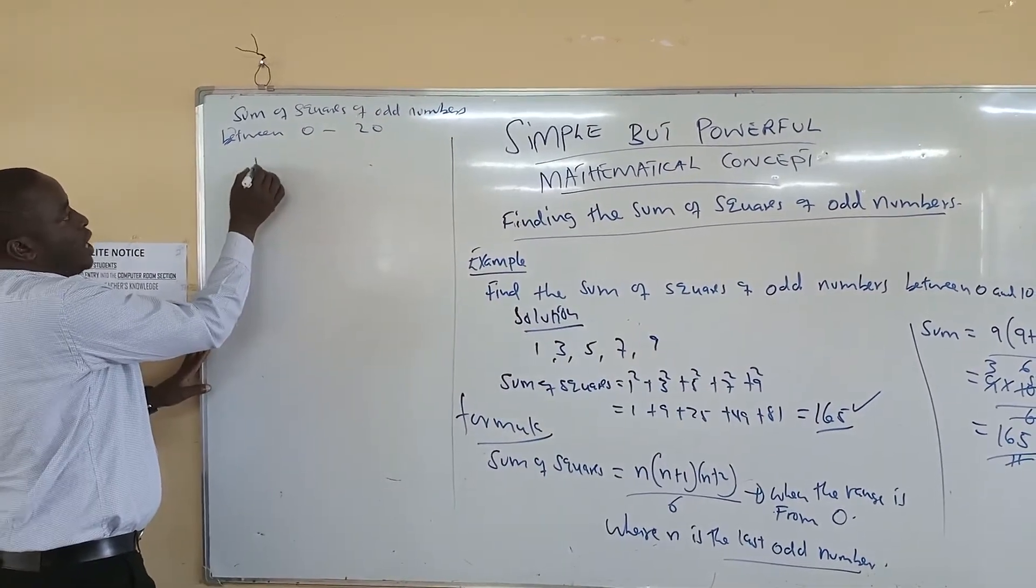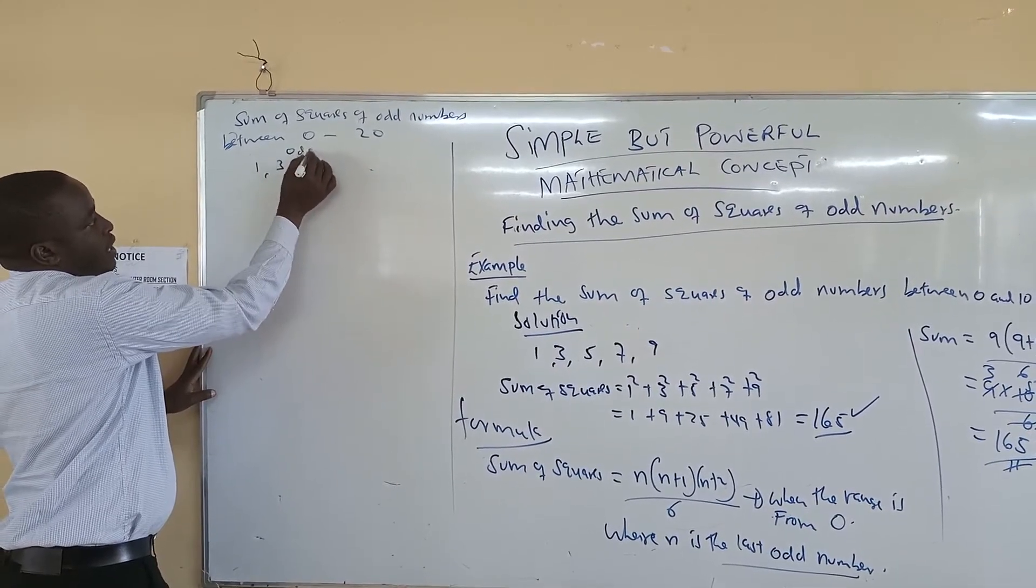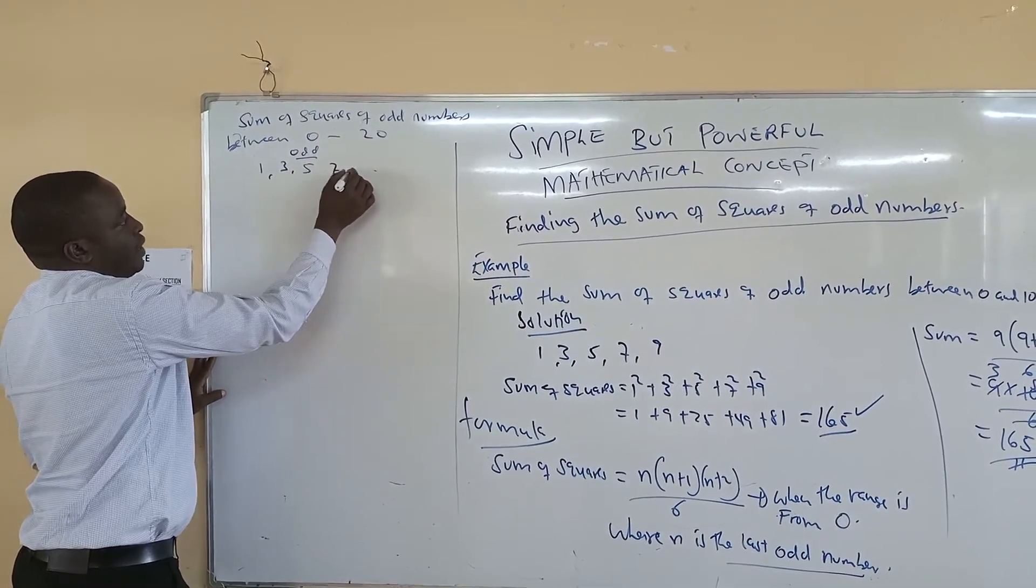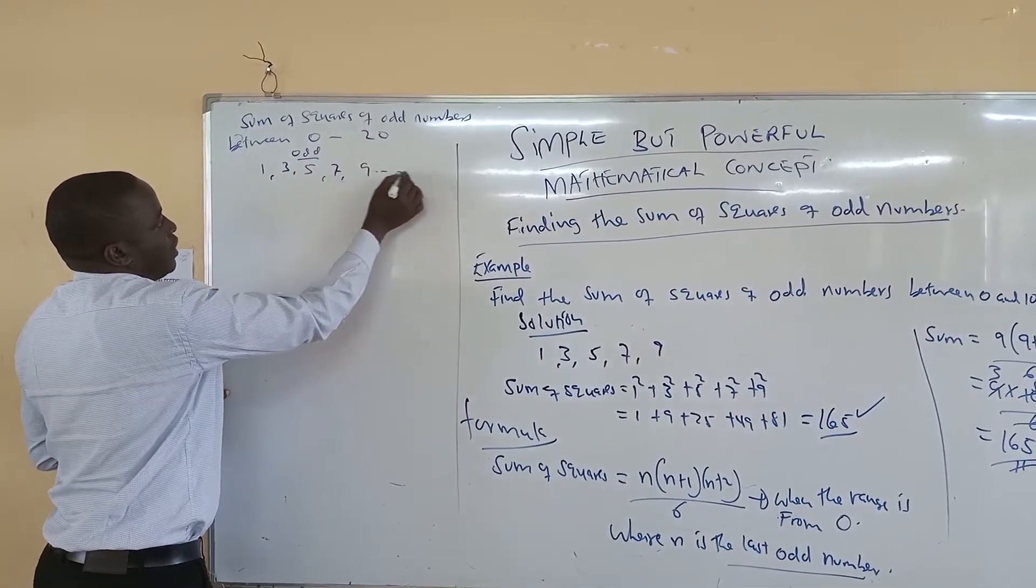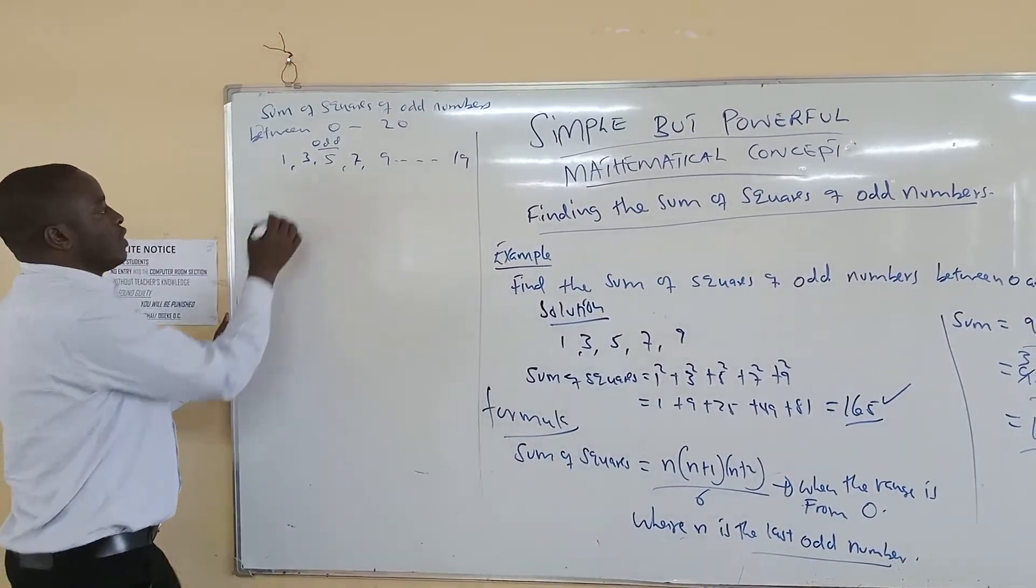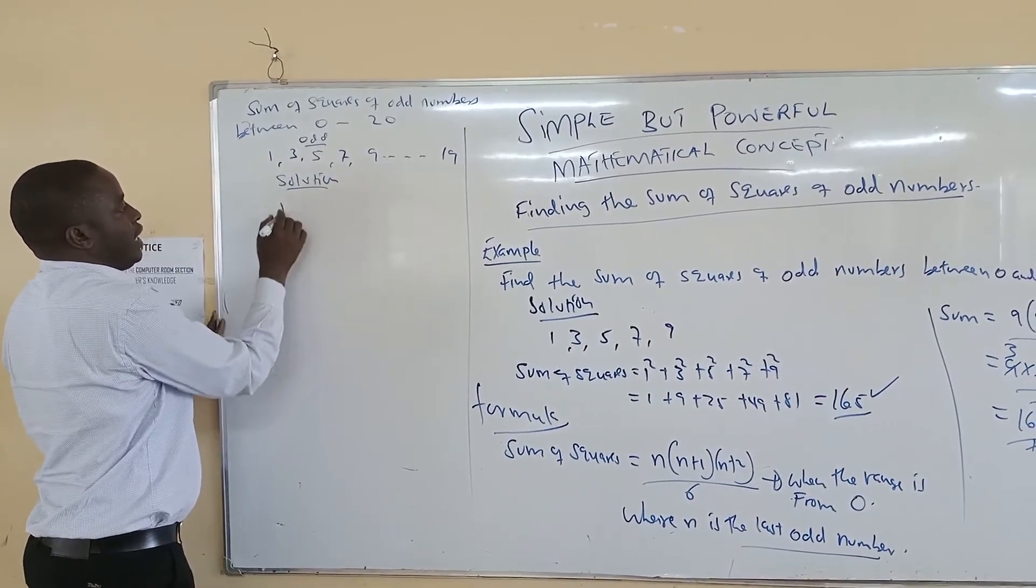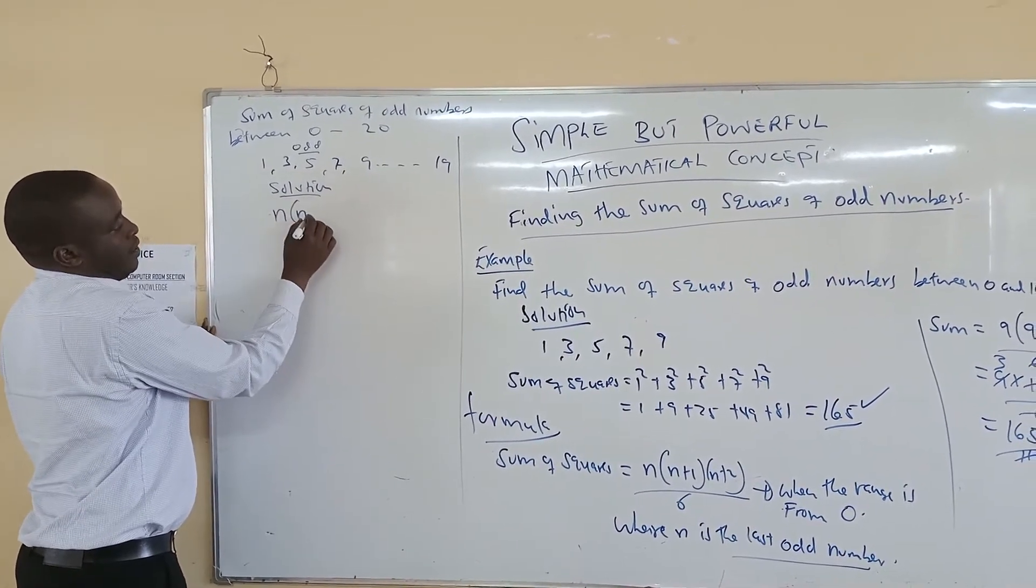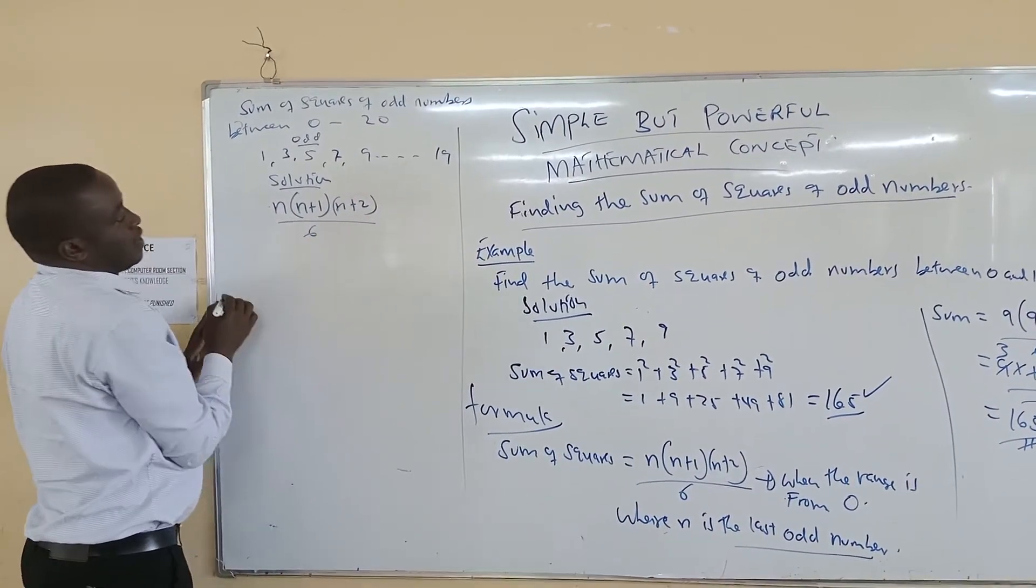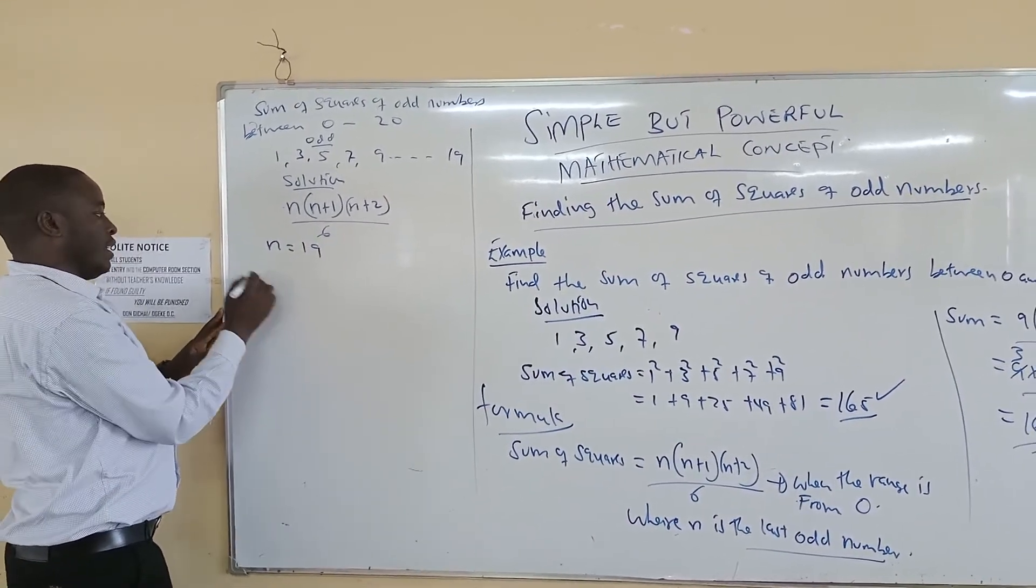So between 0 and 20, we know we shall have the odd numbers 1, 3, 5, 7, 9, up to 19. So our last odd number is 19, so the formula is L into L plus 1 into L plus 2, all over 6. So here, in this case, our L equals to 19, that is our L.